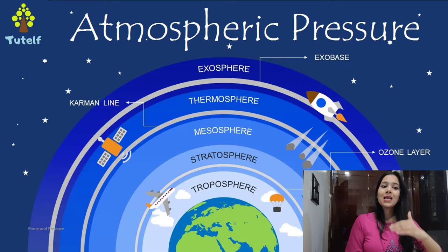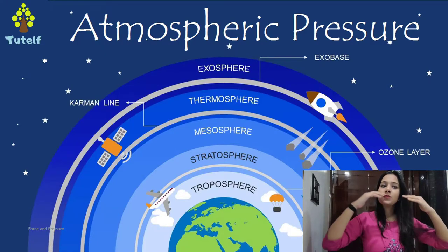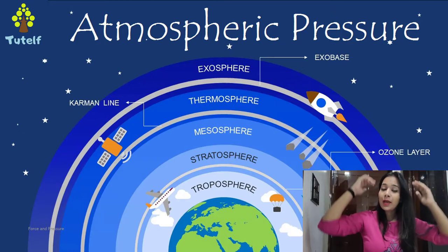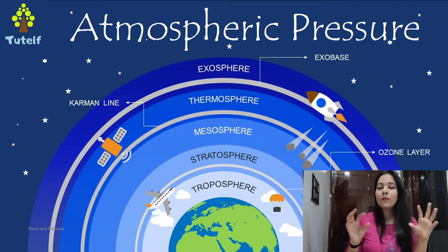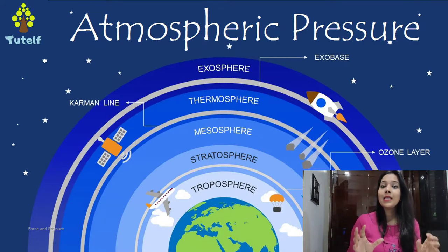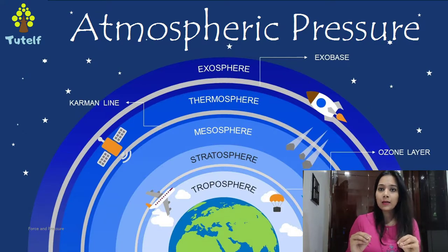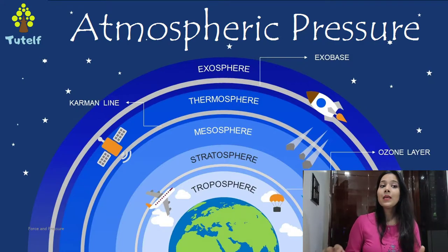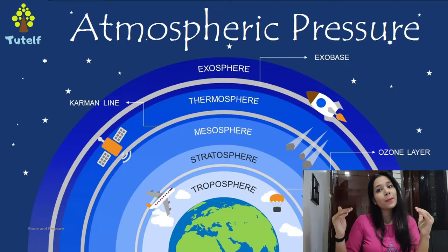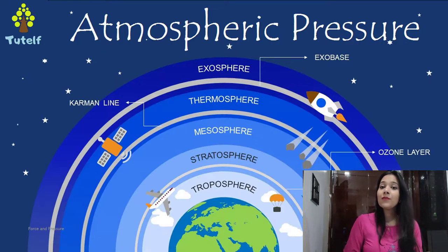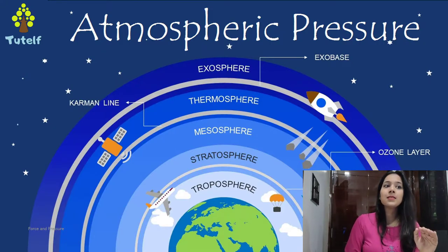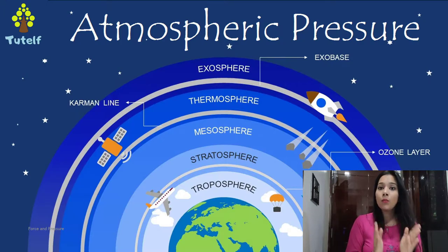Why? Because as we go up from troposphere, stratosphere, mesosphere, thermosphere, and exosphere, the number of particles of air in the atmosphere keeps on decreasing. Since the number of particles is decreasing, the force applied will be less. So at the troposphere, where we have the maximum number of air particles, the atmospheric pressure will be more.